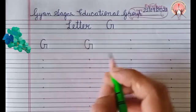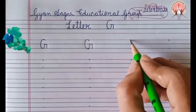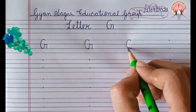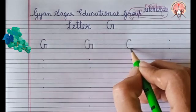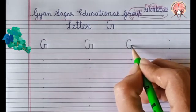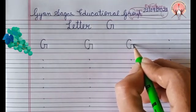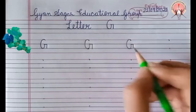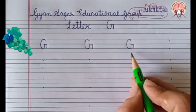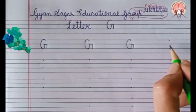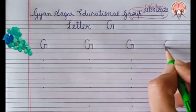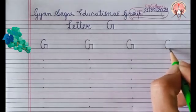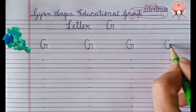Which letter is this? G. Big curve, go to the middle, sleeping line, standing line. G. G for grapes.